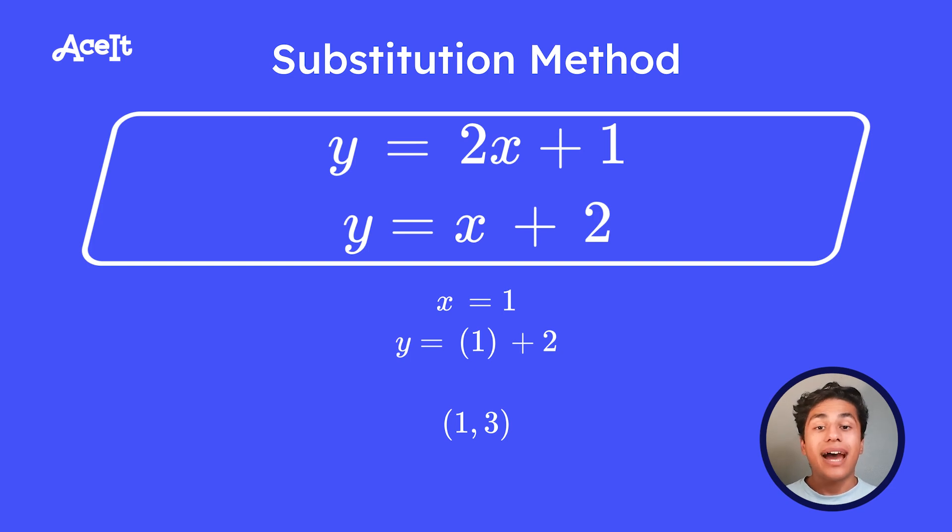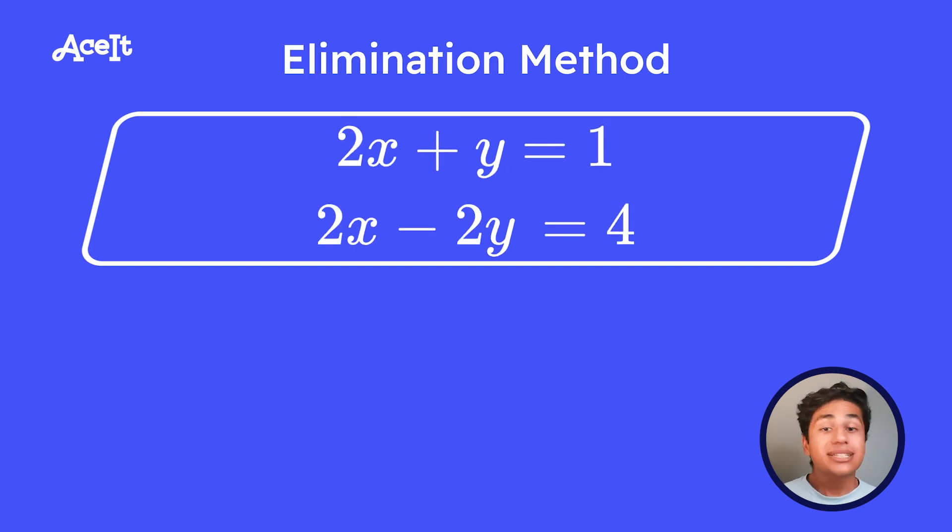Now the last method we have is elimination. So as the name suggests, you're going to get rid of or eliminate one of the variables and solve. We do this by subtracting one equation from the other, making sure one variable cancels out. So in this case, we have 2x plus y equals 1 and 2x minus 2y equals 4. So if we subtract these, the x's will cancel out. So let's do that. This will leave us with 3y equals negative 3 or y equals negative 1.